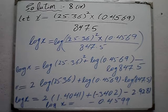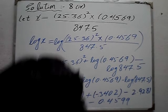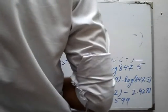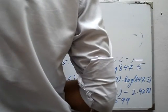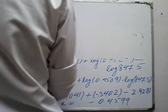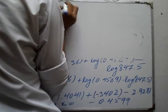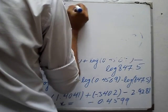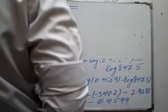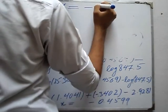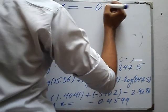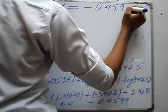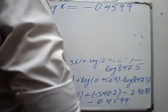Log of x has come to us. We have found log of x. Log of x is equal to minus 0.4599.